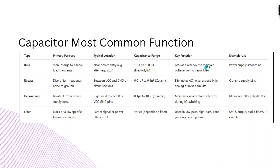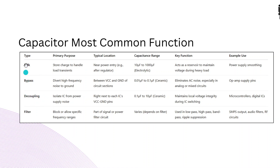The bulk capacitor acts as a reservoir to maintain voltage during heavy loads. For example, if a buzzer suddenly activates, there is a sudden current demand that causes a voltage dip. The bulk capacitor compensates for that dip. Note that the terms bulk, decoupling, and bypass are often used loosely to refer to similar purposes.